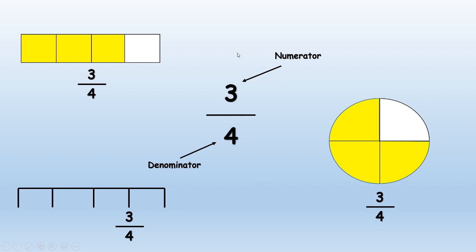Example, as you can see, three parts have been colored in and one has not. Same here with the pie graph. As you can see, there are four pieces which represent the whole or your denominator, and then the three colored in pieces represent your numerator.